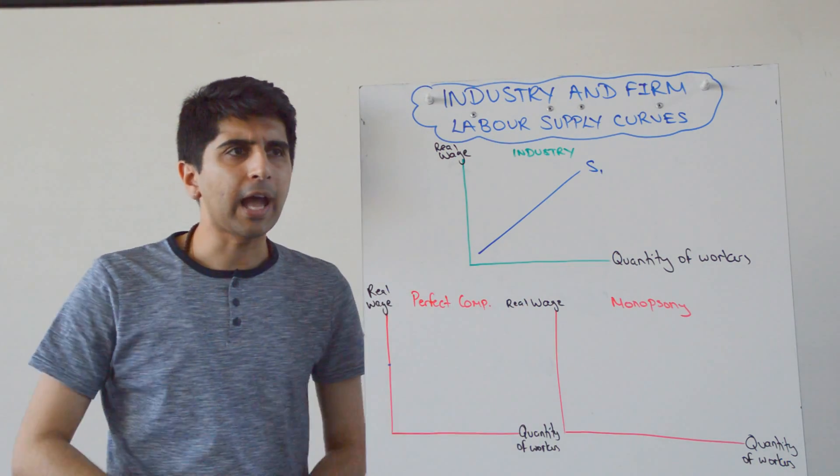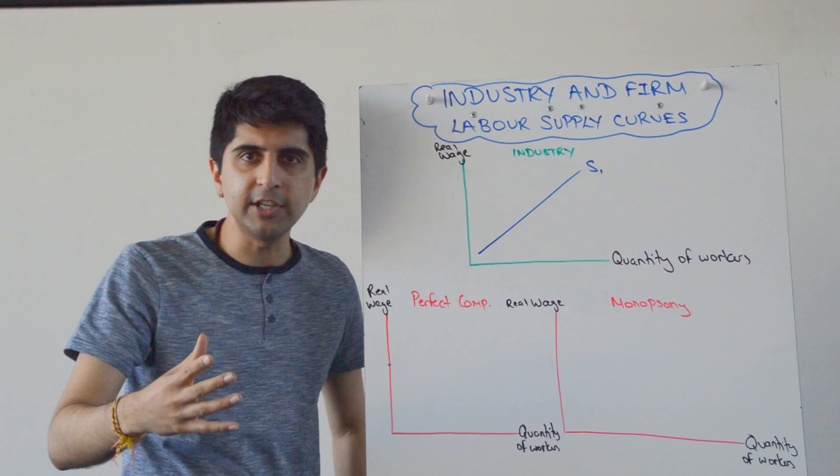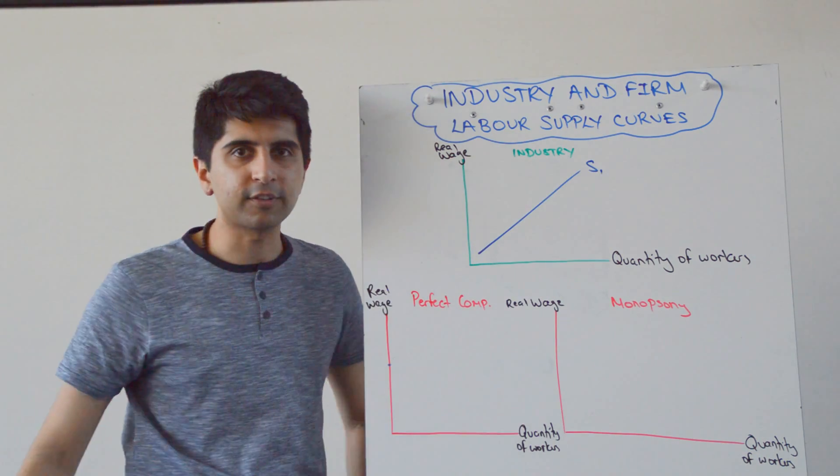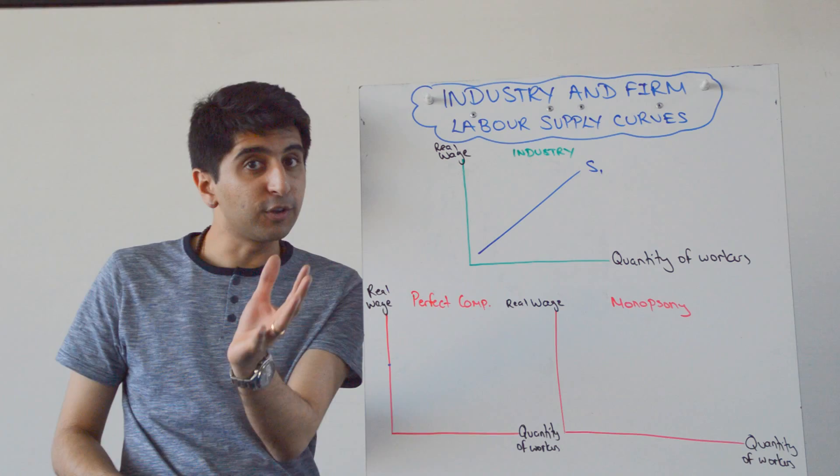And you might think, well hang on a minute, how could it be backward bending for individuals, but then when you put them all together we get a linear upward slope? That seems a bit odd, and that's a good point.